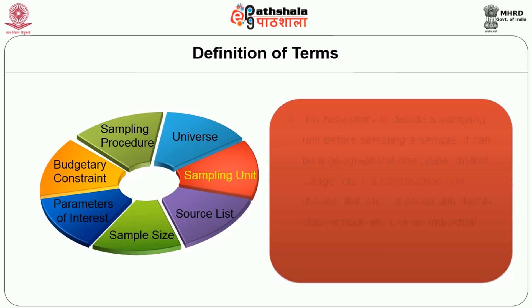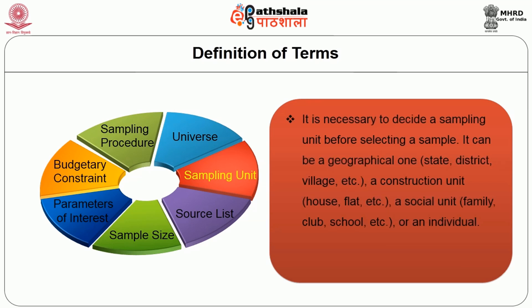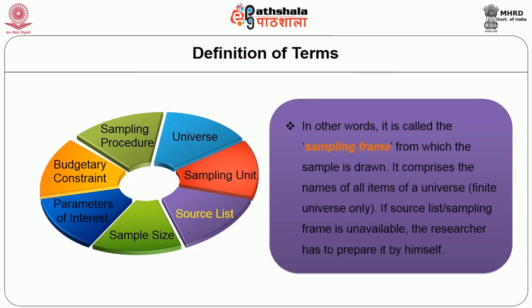Sampling unit: it is necessary to decide a sampling unit before selecting a sample. It can be a geographical one like a state, a district, or a village; or a construction unit like a house or a flat; or a social unit like a family, a club, a school, or even an individual. The source list, in other words called the sampling frame, is from which the sample is drawn. It comprises the names of all items of a universe, in the case of a finite universe only.